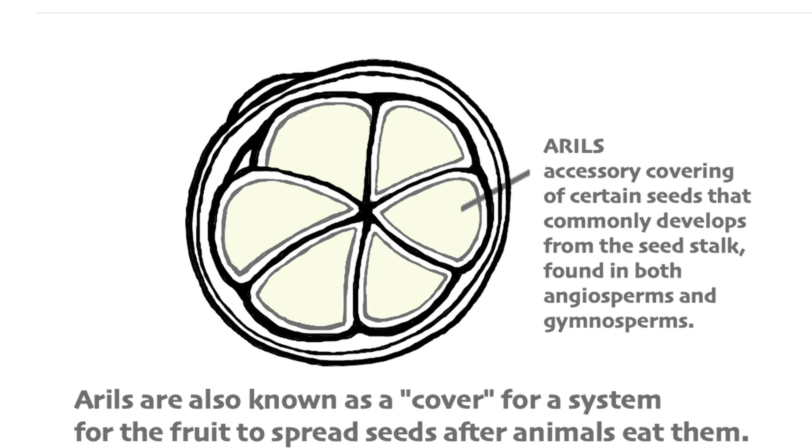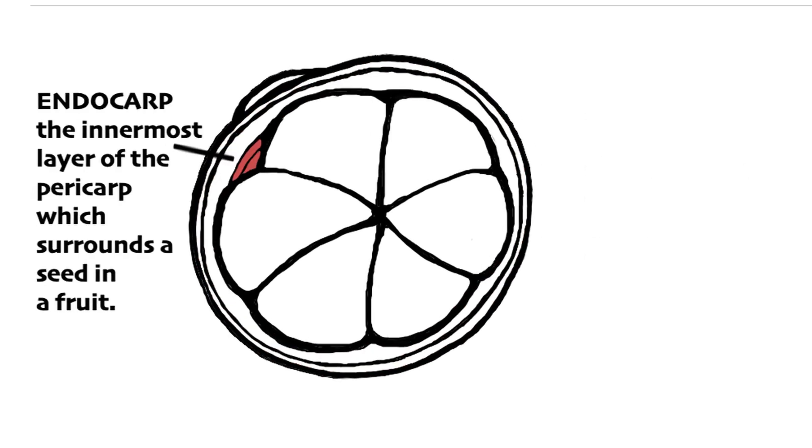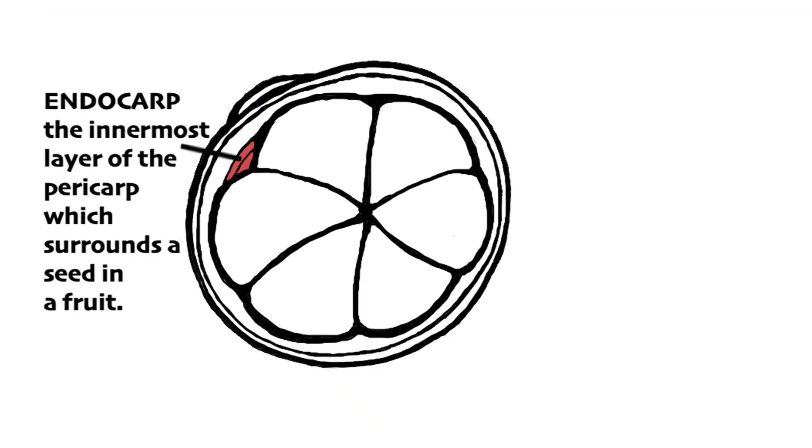Aryls are a cover. The exocarp's the skin. The mesocarp's the inner layer, and the endocarp is what holds the kernel within.